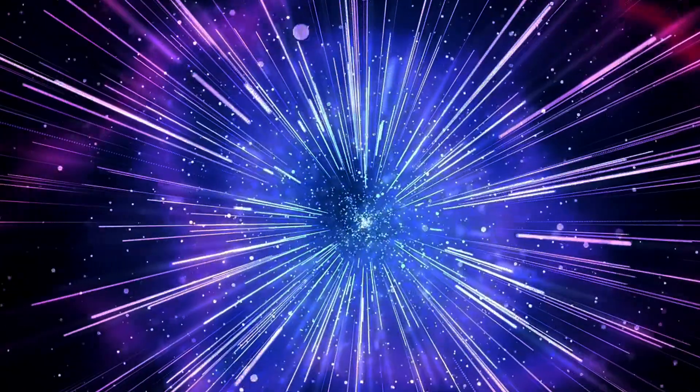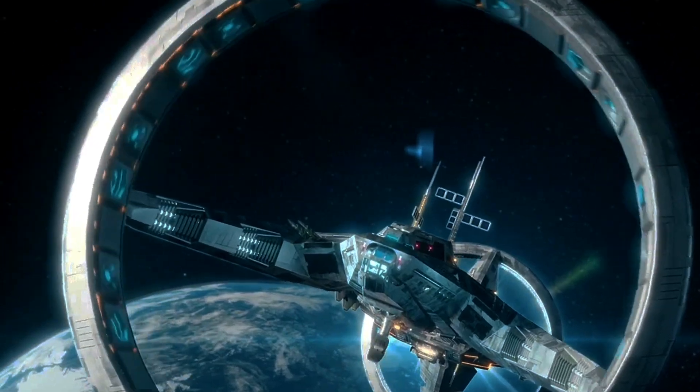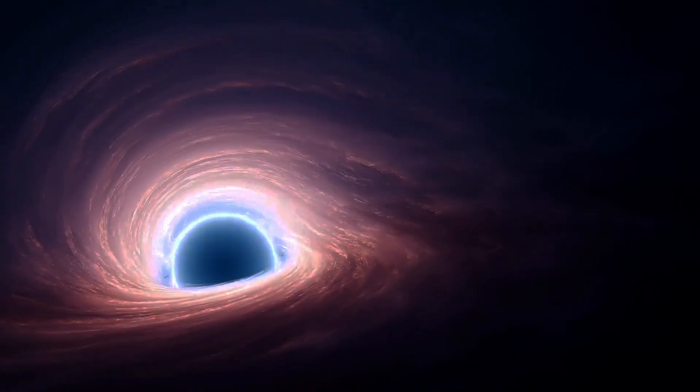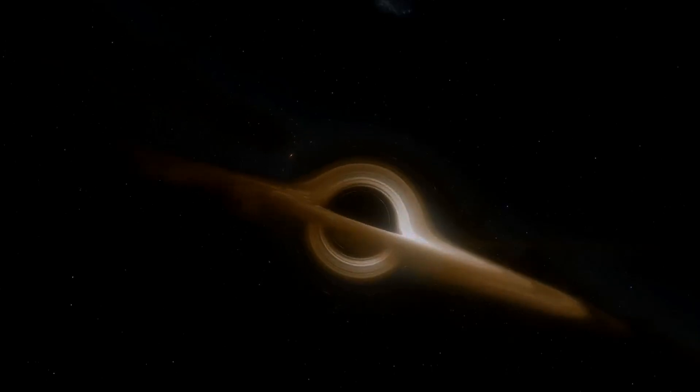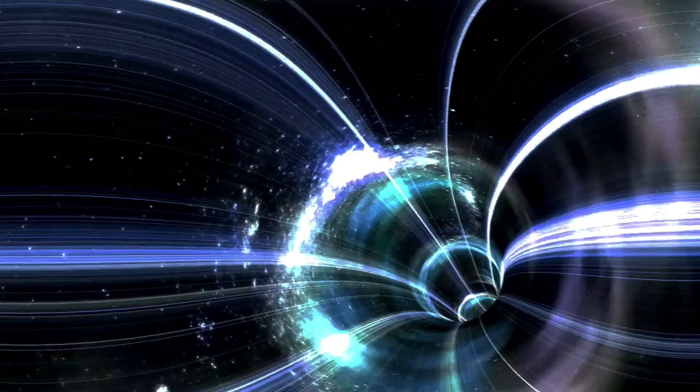In contrast to white holes, the formation of black holes is well documented. Black holes are born from the remnants of massive stars whose cores contract under immense gravitational force, eventually forming a singularity. This process is dynamic and observable. A massive star evolves and collapses into a black hole. Thus, black holes are not eternal. They have a beginning, a life cycle and potentially an end.